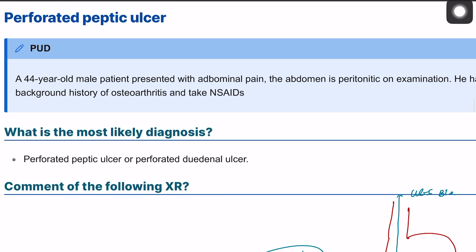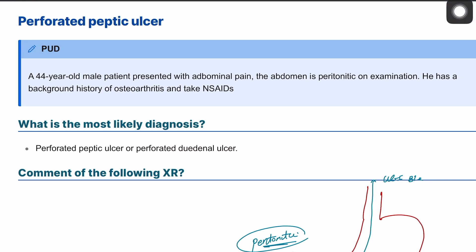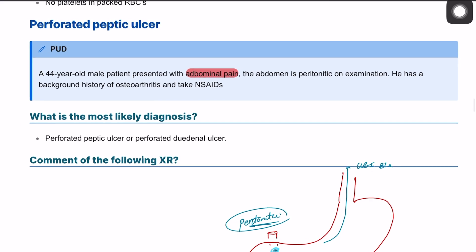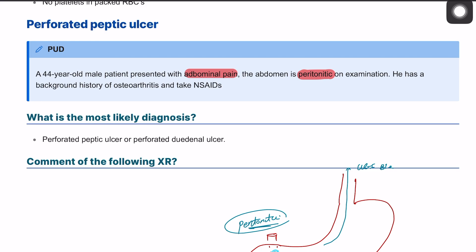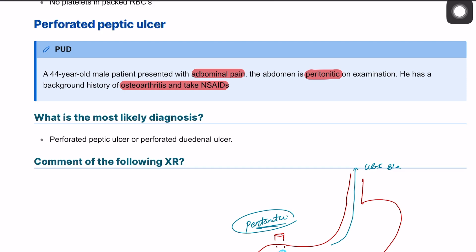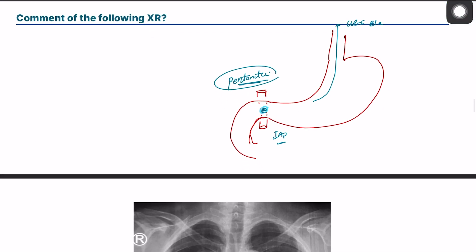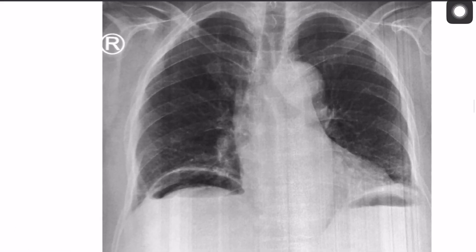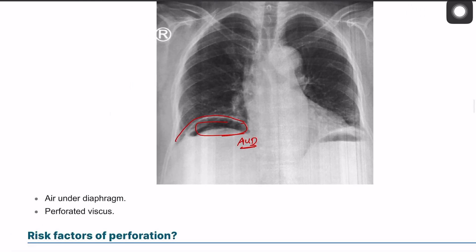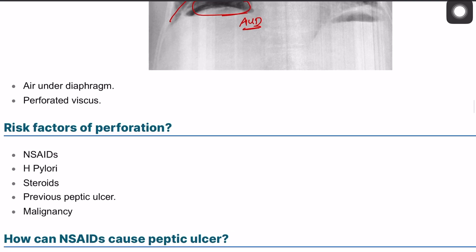The scenario here is a 44-year-old male patient presenting with abdominal pain, a peritonitic abdomen on examination, and a background history of osteoarthritis — he is taking NSAIDs. This clue is very important: a patient presenting with a peritonitic abdomen who is taking NSAIDs makes perforated peptic ulcer the top diagnosis. Looking at this X-ray, you can see air under the diaphragm, which confirms a perforated viscus.